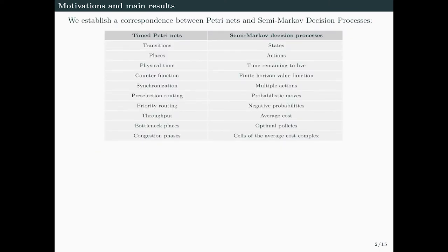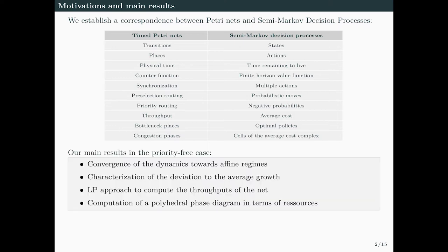In our conference paper, we establish a correspondence between time Petri nets and semi-Markov decision processes. This correspondence is detailed in this table and will be further explained later. When there are no priority rules, we derive four main results: the convergence of the dynamics towards affine regimes, a characterization of the deviation to the average growth, an LP approach to compute the throughput of the nets, and the computation of a polyhedral phase diagram in terms of resources.